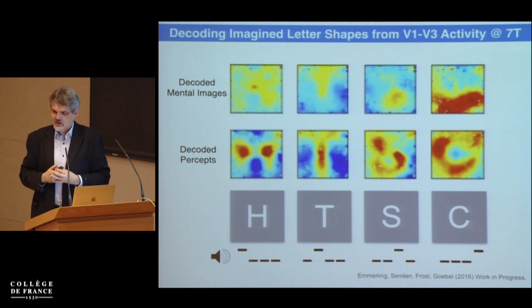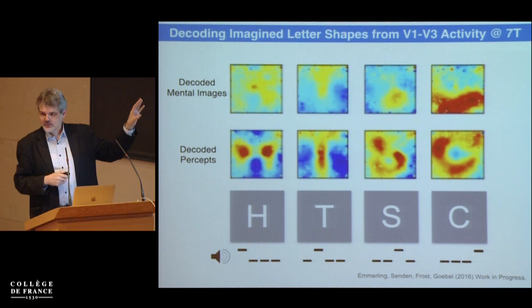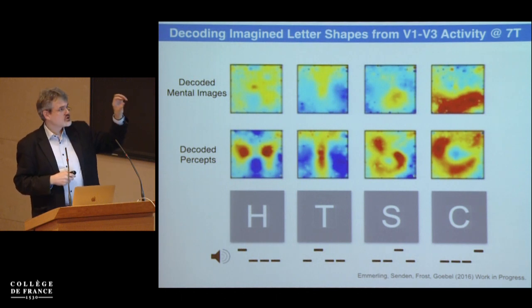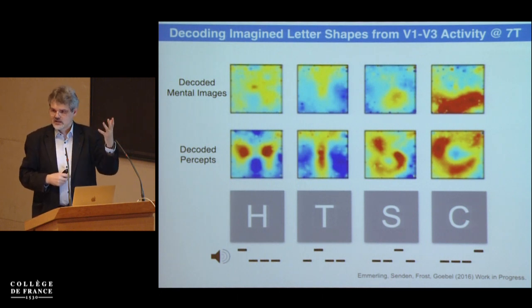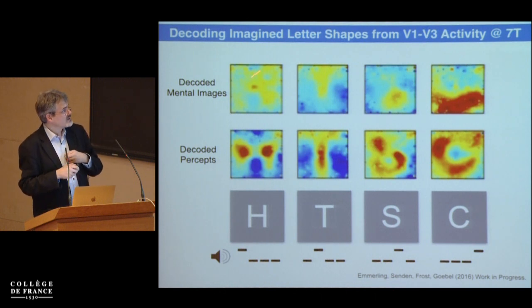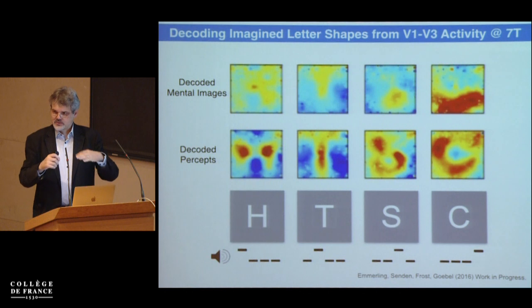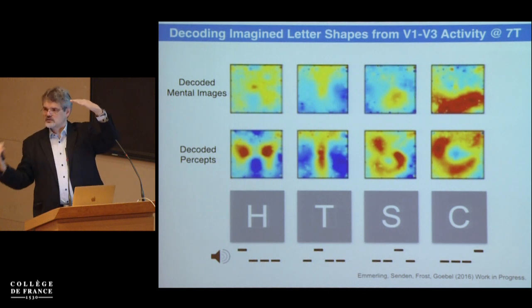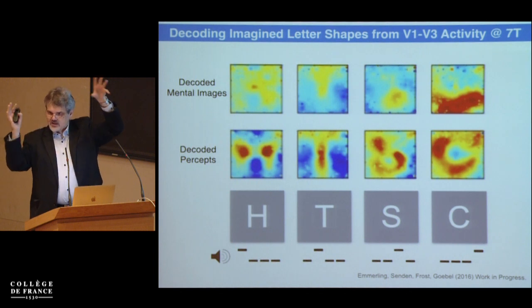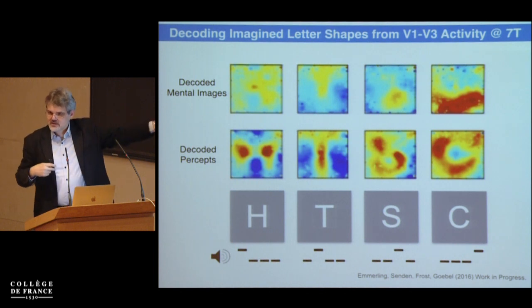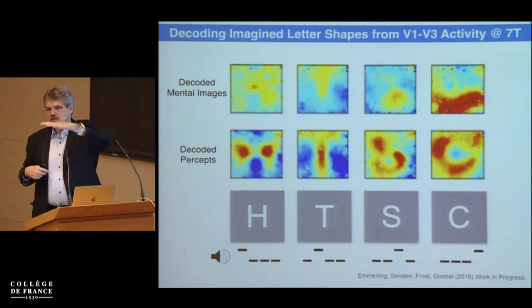This is a very early study, not yet published, but it shows that in the future high-field imaging may enable BCIs built simply on imagining letters and reading them out. We used 0.8 mm resolution but have not yet done laminar separation. I'm now working on running pRF at different depth levels — superficial, middle, deep — to see whether restricting to middle and lower layers, which are less affected by top-down feedback, gives even cleaner letter reconstructions.